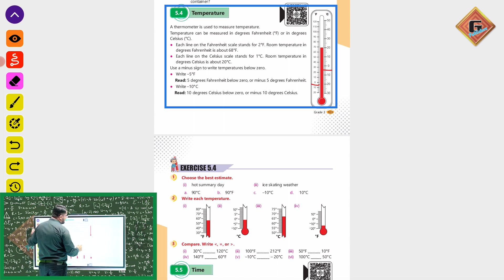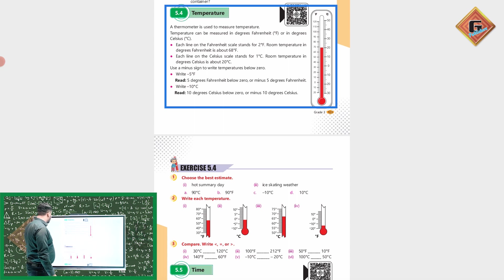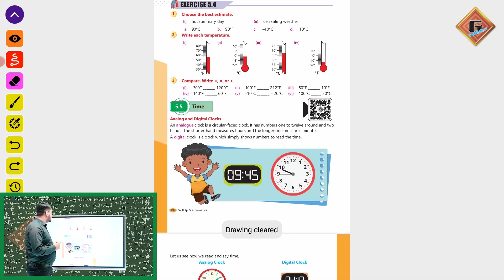We will move to Exercise 5.4. Choose the best estimate - choose the best estimate. Choose the hot summer day - because the hot summer day will be 90 degree Celsius or 90 Fahrenheit. 90 degree Celsius would be so extreme, so this is the second one - we will use 90 Fahrenheit.